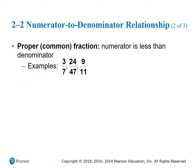Proper or common fractions are fractions with a numerator that is less than the denominator. For example, 3/7, 24/47, and 9/11. The value of any proper or common fraction is going to be less than one whole. We're saying we have a thing that has seven parts to make a whole, and the top number is telling us there are three parts.